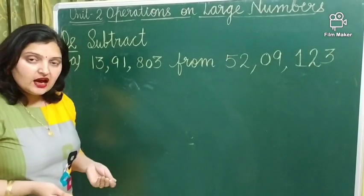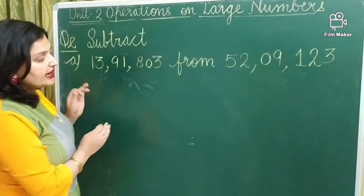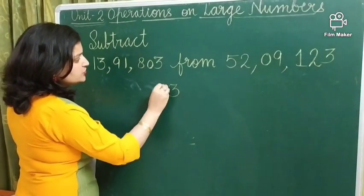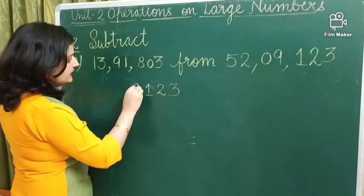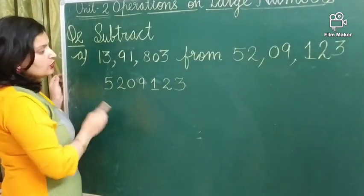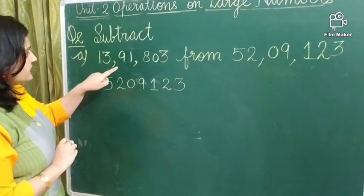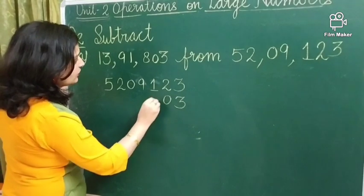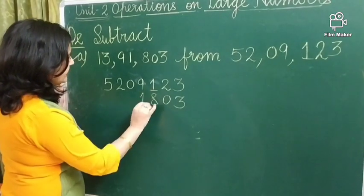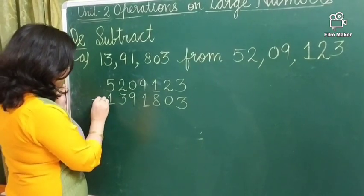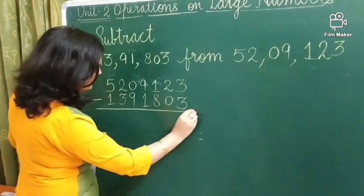And once again, how you have to write? You have to write it from one's place. So, 3, 2, 1, 9, 0, 2, 5. Now, what number? Which number you have to subtract? This one. So, again, 3, 0, 8, 1, 9, 3, 1. Now, apply the sign of subtraction. And then, you can subtract.